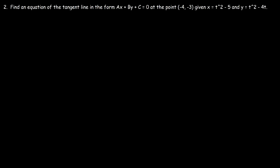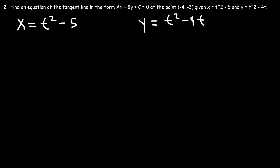Now let's move on to our next question. Find an equation of the tangent line in the form ax plus by plus c equals 0 at the point (negative 4, negative 3), given x is equal to t squared minus 5 and y is equal to t squared minus 4t. This time we don't have the t value — we're given instead the x and y coordinates of the point. We already have x1 and y1, so the only thing we need to find is the slope.